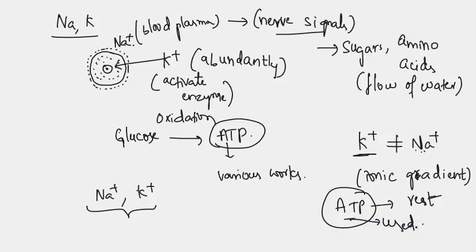Because of this difference in the gradient inside the cell and outside the cell, energy is used up to some extent. This is the main use of sodium and potassium ions in the human and animal body.